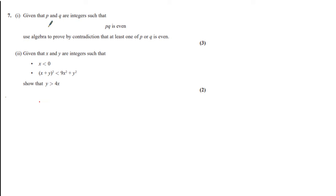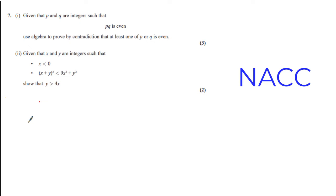Question 7 part i says: given that p and q are integers such that pq is even, use algebra to prove by contradiction that at least one of p or q is even. This question is for three marks. This is a proof by contradiction question and we're going to use the NAC method — the standard method you can use to approach any proof by contradiction question. The first thing we need to do is come up with a negation statement.